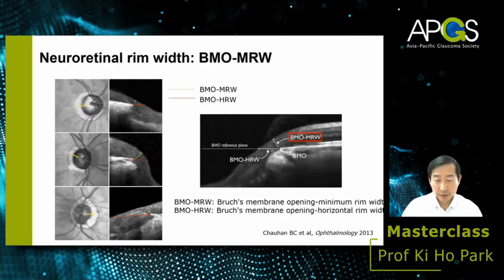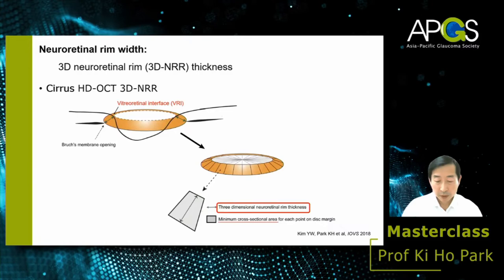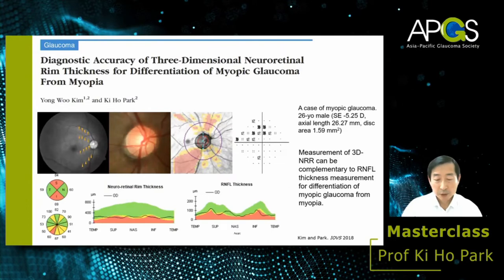OCT can measure the neural retinal rim width. Dr. Balwantkar's group proposed BMO-MRW: the minimum distance between Bruch's membrane opening and the internal limiting membrane. BMO-MRW showed significantly higher sensitivity at 95% specificity to detect early glaucoma than other parameters. A similar concept in Cirrus OCT is the three-dimensional neural retina rim (3D NRR) thickness, calculated from the minimum cross-sectional area of the trapezoid between the BMO and the vitreoretinal interface. 3D NRR measurement is complementary to RNFL thickness for differentiating myopic glaucoma from myopia.